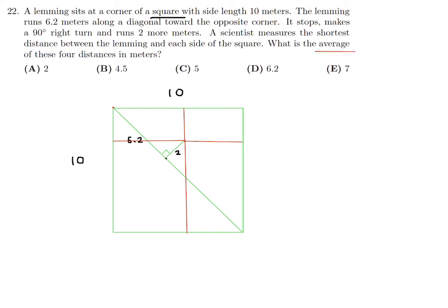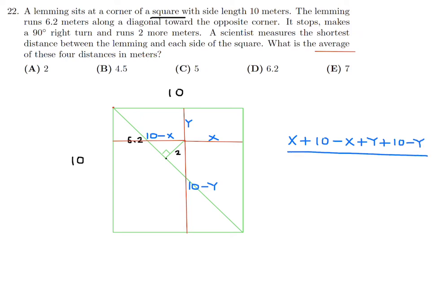Let's label the distance to one side as x, so the opposite side is 10 minus x. The distance to an adjacent side is y, so the other adjacent side is 10 minus y. The average is (x + (10 − x) + y + (10 − y)) divided by 4. The x's cancel and the y's cancel, giving 20 over 4, which is 5. Number 22, the answer is C.